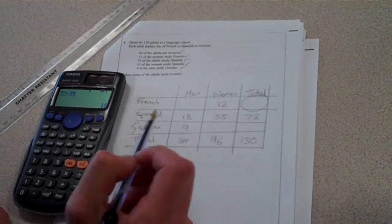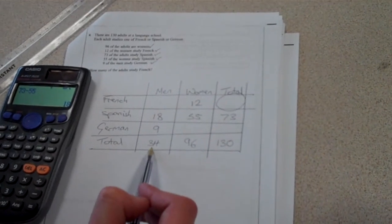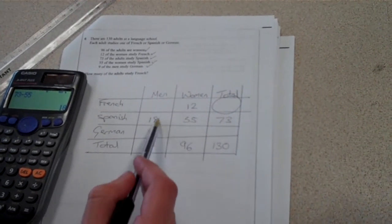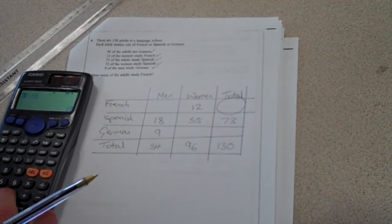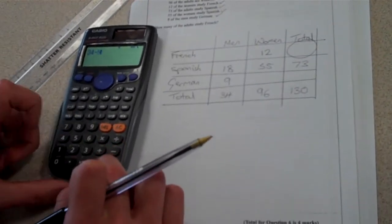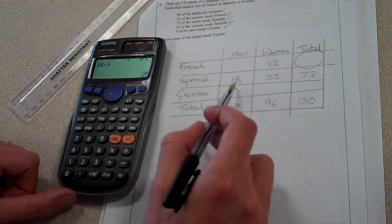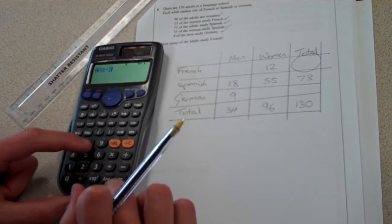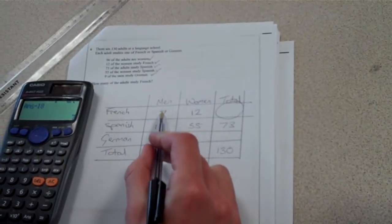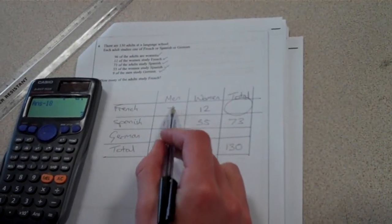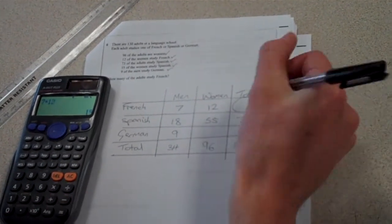I can now work out the total number of men doing French. Because these three numbers will total to become 34. So if I do 34 minus 9 minus 18 and work out the remainder, that will be the amount of men doing French. So if I do 34 minus 9, I could do it as one sum, but I can easily just put an equals in between. Leads me to 25 left. So if I minus the 18 that are doing the Spanish, that leaves me with 7 men left that are doing French. The total number of adults studying French is 7 plus 12. I can use my calculator if I wish to do 7 plus 12 is 19.